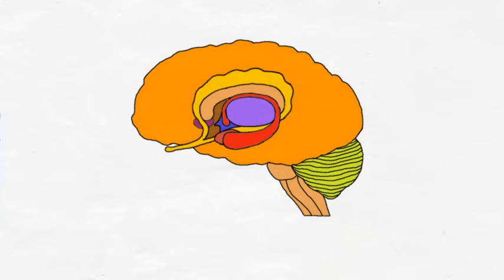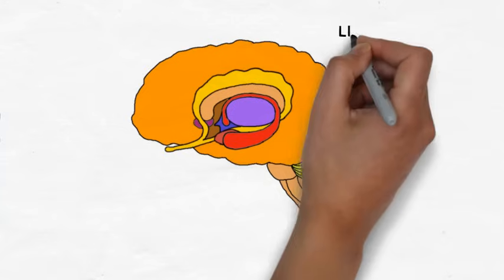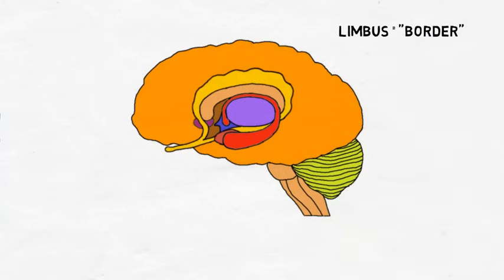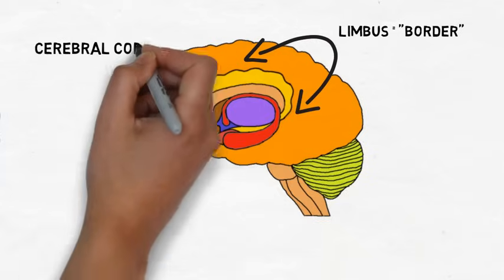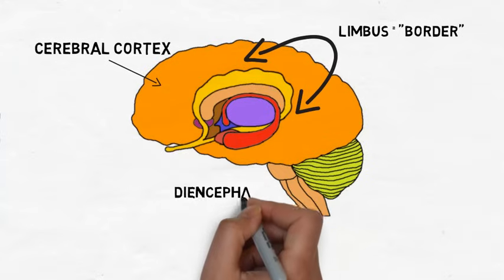The word limbic comes from the Latin limbus, which means border. The limbic system was given this name because its structures lie along a horseshoe-shaped area of cortex that appears to be a border between the cerebral cortex and the subcortical structures of the diencephalon.